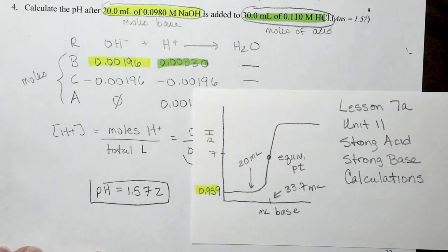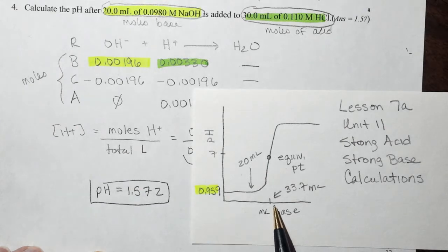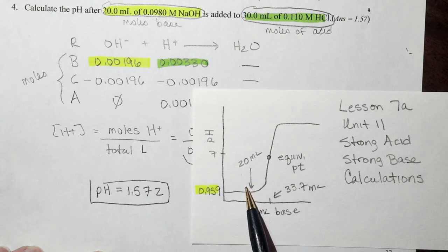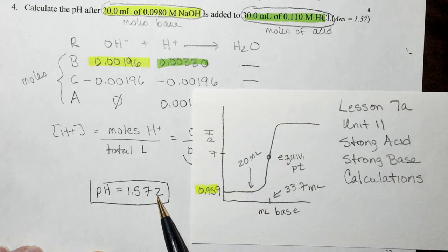So let's look at what we just did there. We said our starting pH was 0.959. We figured out our equivalence point was 33.7. And we just calculated that the pH at 20 mLs of base was about 1.572.